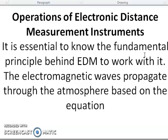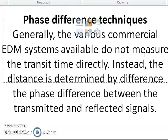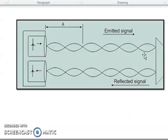The operation of the Electronic Distance Measurement instrument requires knowing the fundamental principle behind EDM. The electromagnetic wave propagates through the atmosphere based on a given equation. The phase difference technique is used — various commercial EDM systems do not measure the transit time directly. Instead, the distance is determined by the phase difference between the transmitted and reflected signal. You can see how the waves move and are reflected — the emitted signal and the reflected signal.